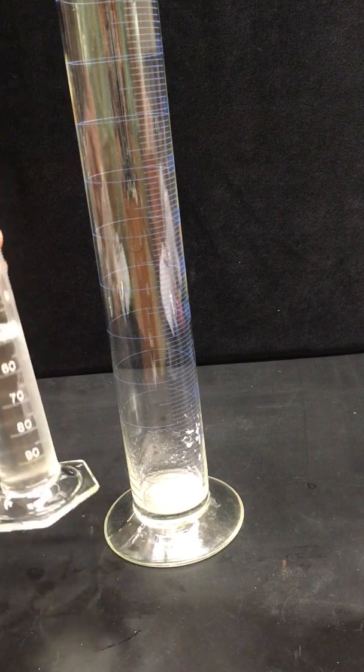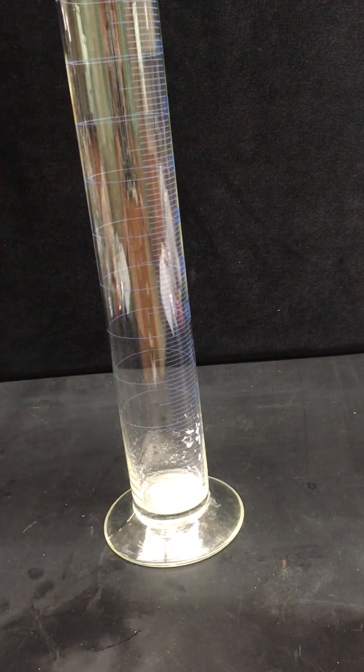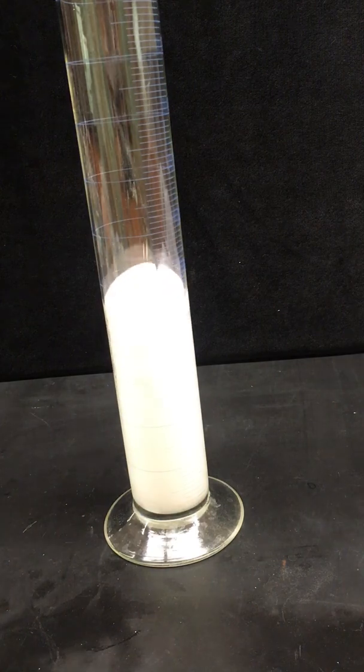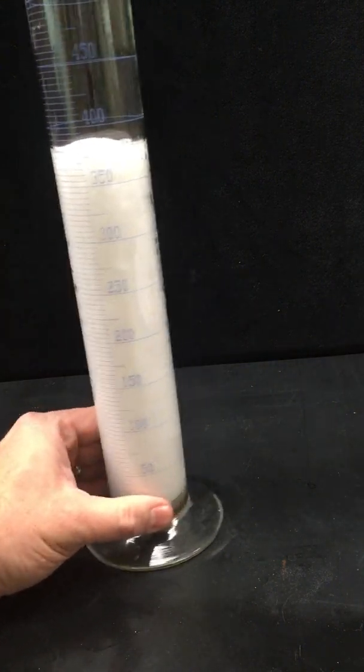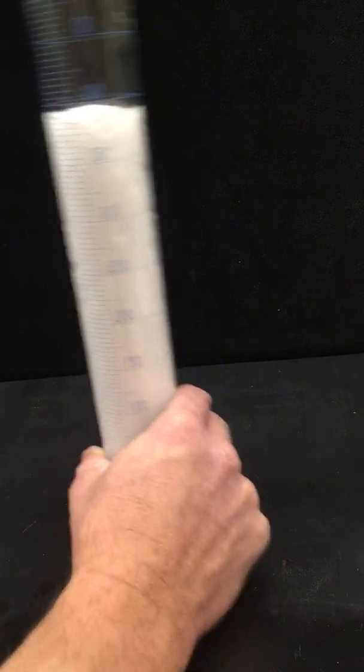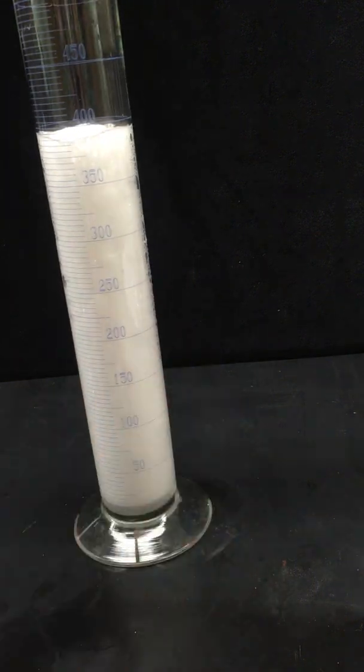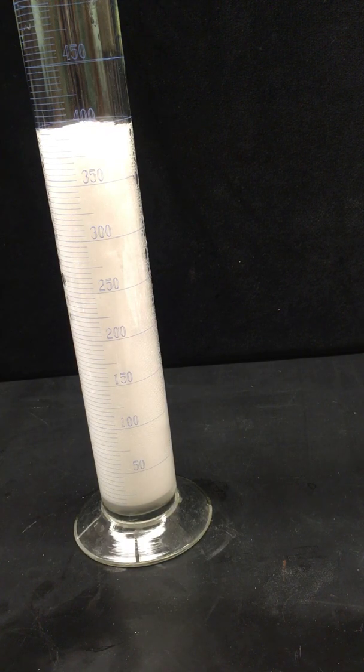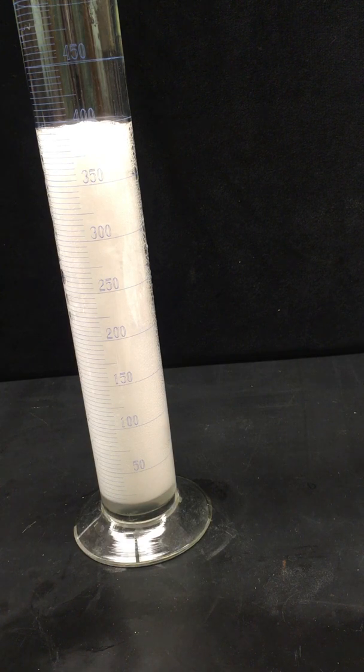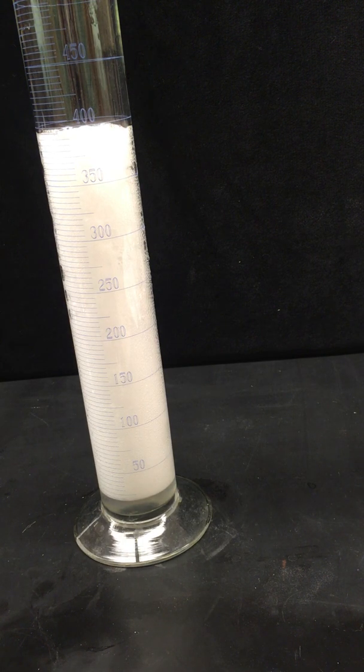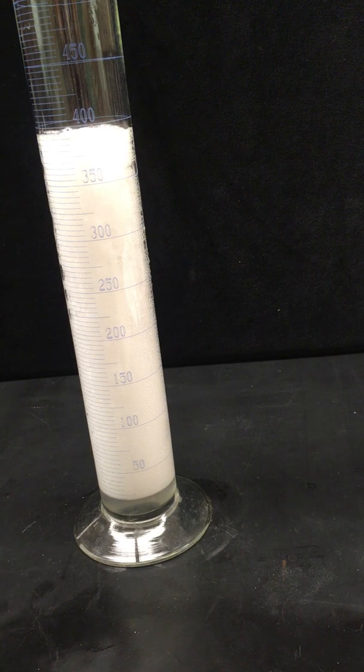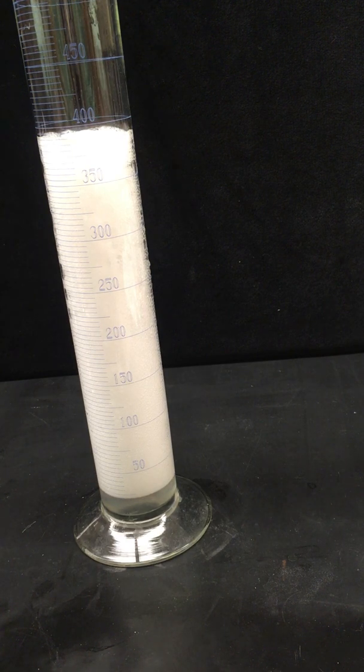This is about 50 milliliters of sulfuric acid, and if I pour this in here, we can see that we're producing quite a bit of suds. Right now we're hitting just about 400 milliliters at the level here. If we subtract out the 50 milliliters of sulfuric acid, that means we've produced 350 milliliters of gas.